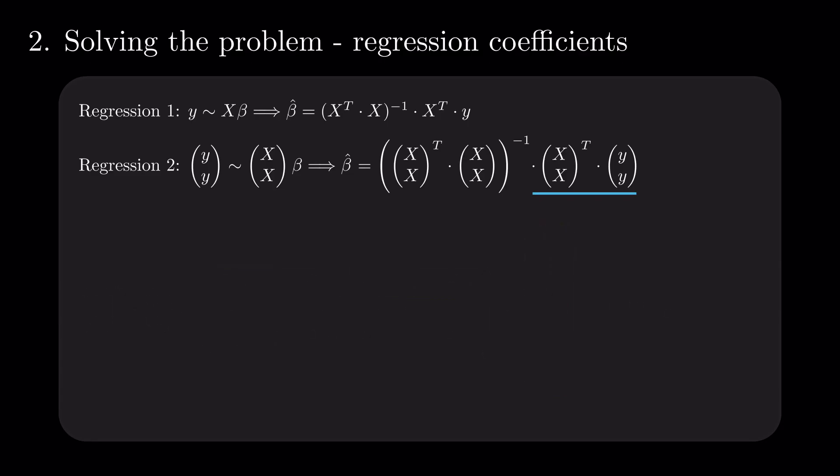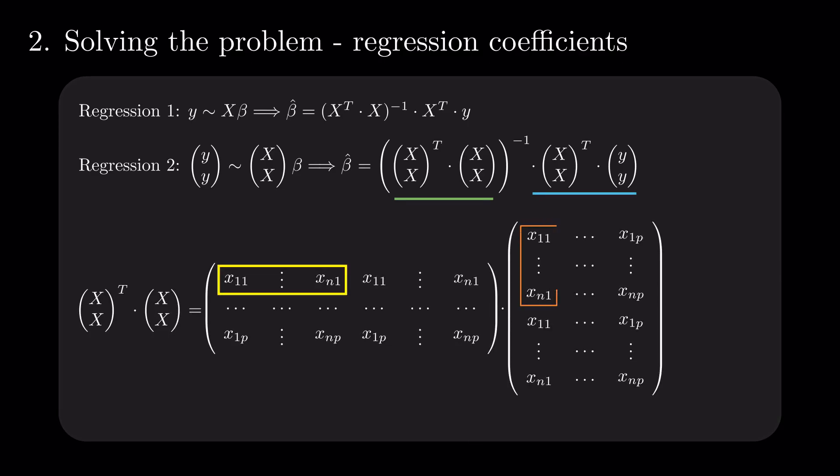How do the remaining components of the formula change? Now that we know how to multiply stacked matrices, we get a result quickly. Double the corresponding product from the initial formula.